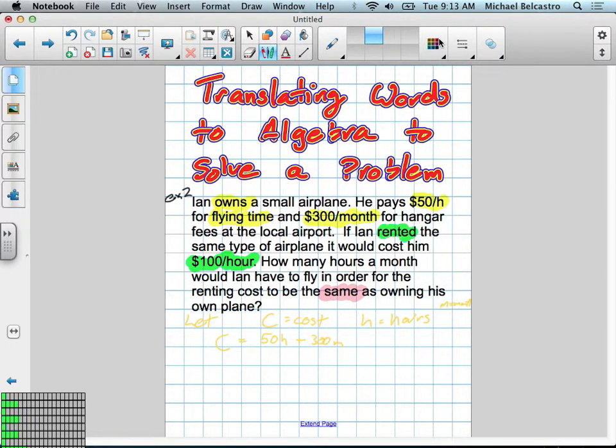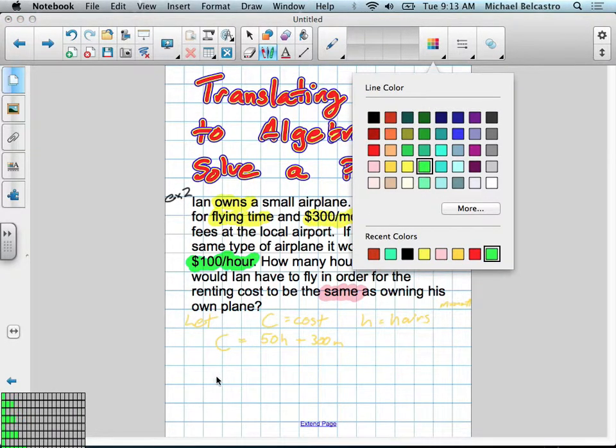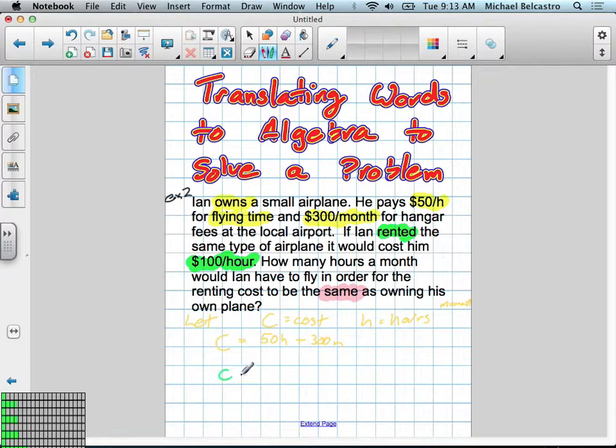The other one is if you rent it, let's do that one in green. His cost is equal to, it's not really a great color, $100 an hour. He has no other fixed cost.